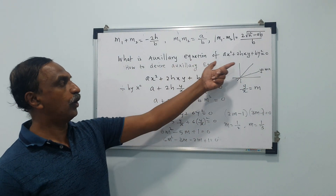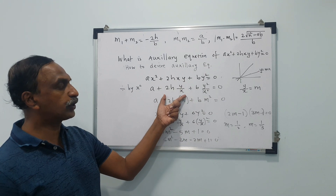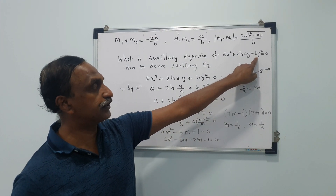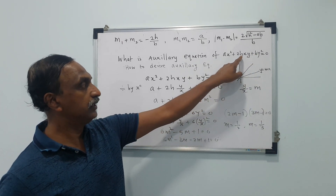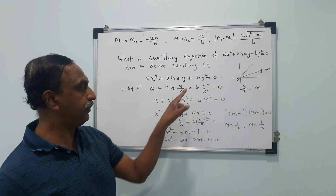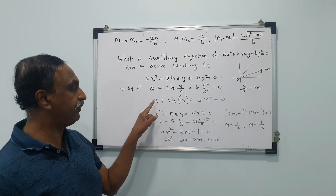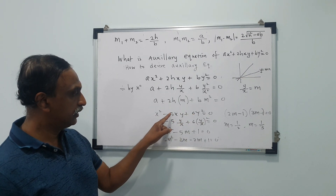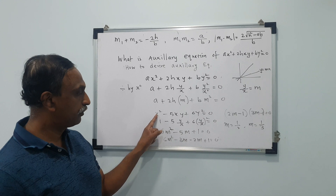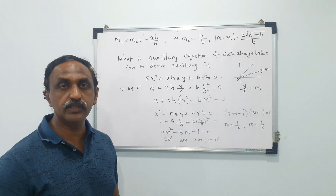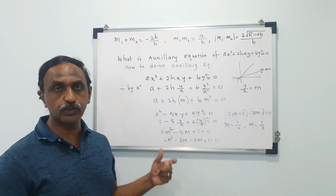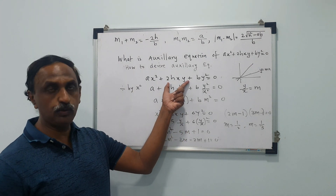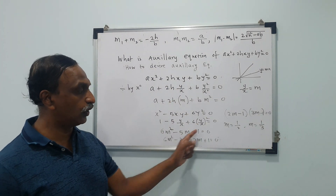So every homogeneous equation has an auxiliary equation. You need to learn how to write the auxiliary equation directly: reverse the coefficients — b becomes the leading coefficient of m², 2h is m's coefficient, and a is the constant term. So for this example, 6m² - 5m + 1 = 0 is the auxiliary equation, without writing all the intermediate steps.